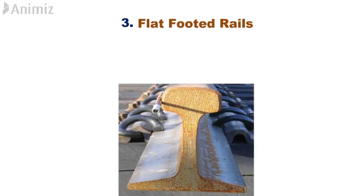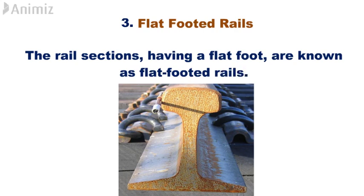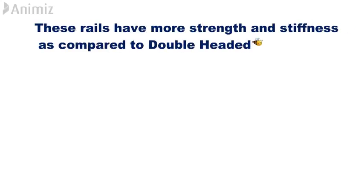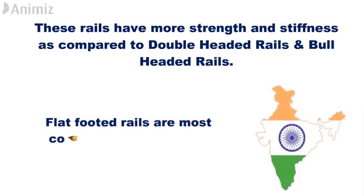3. Flat-footed rails. The rail sections having a flat foot are known as flat-footed rails. These rails have more strength and stiffness as compared to double-headed rails and bull-headed rails. Flat-footed rails are most commonly used in India.